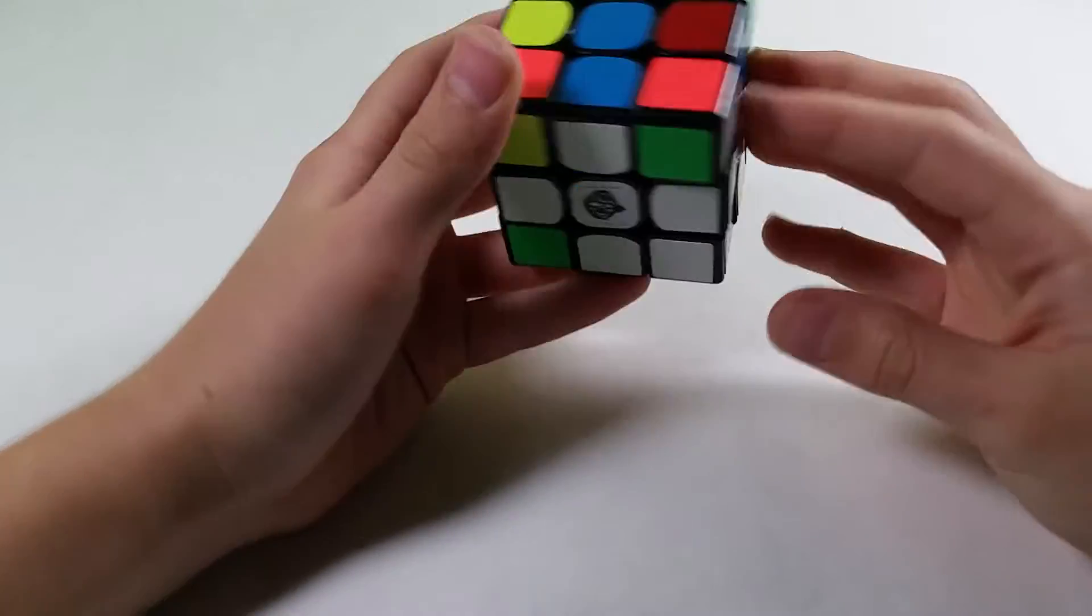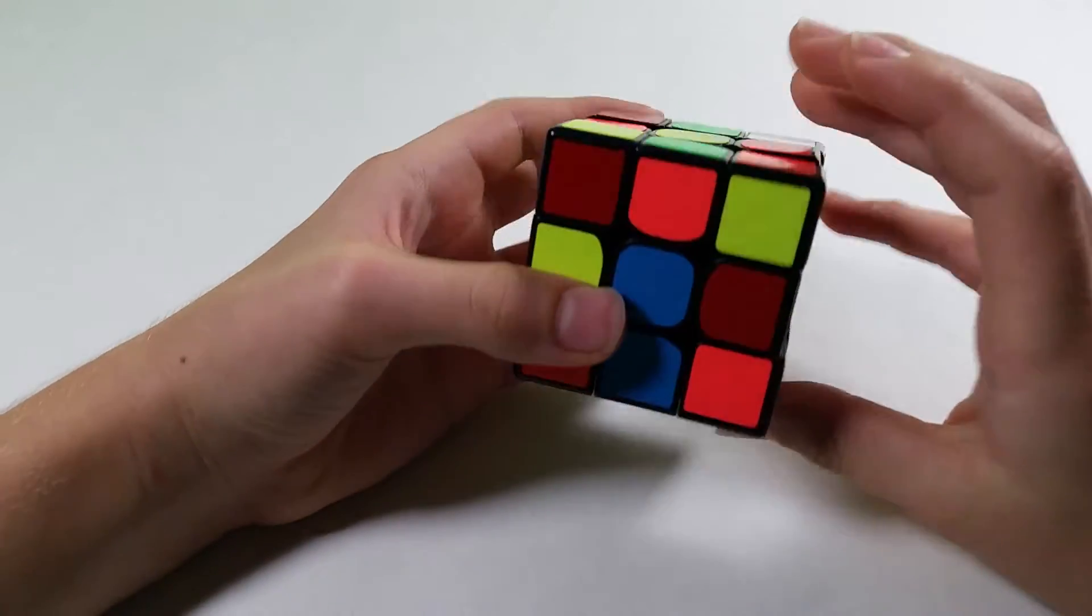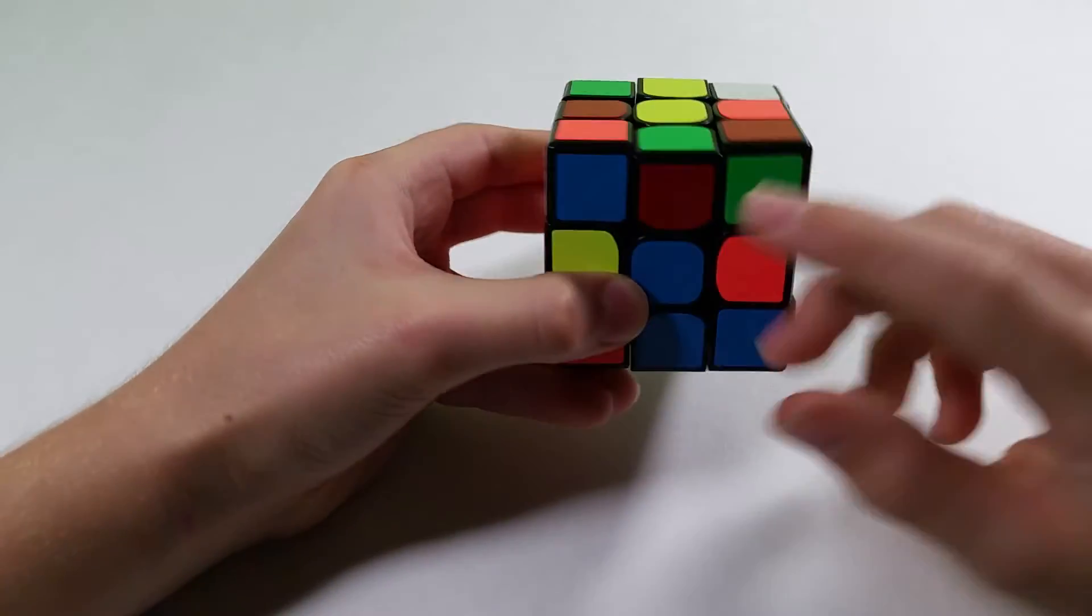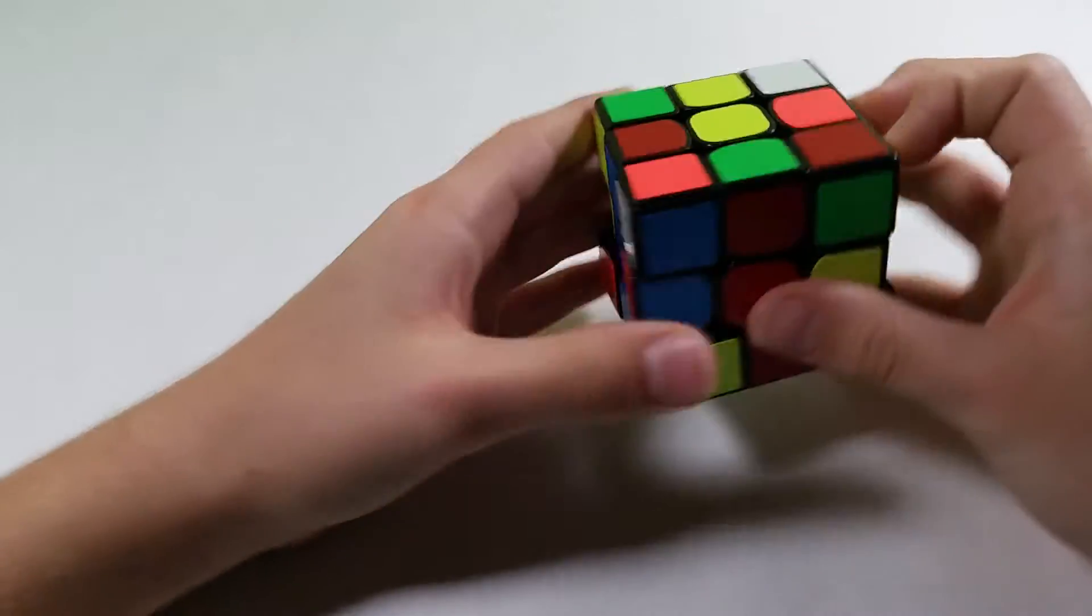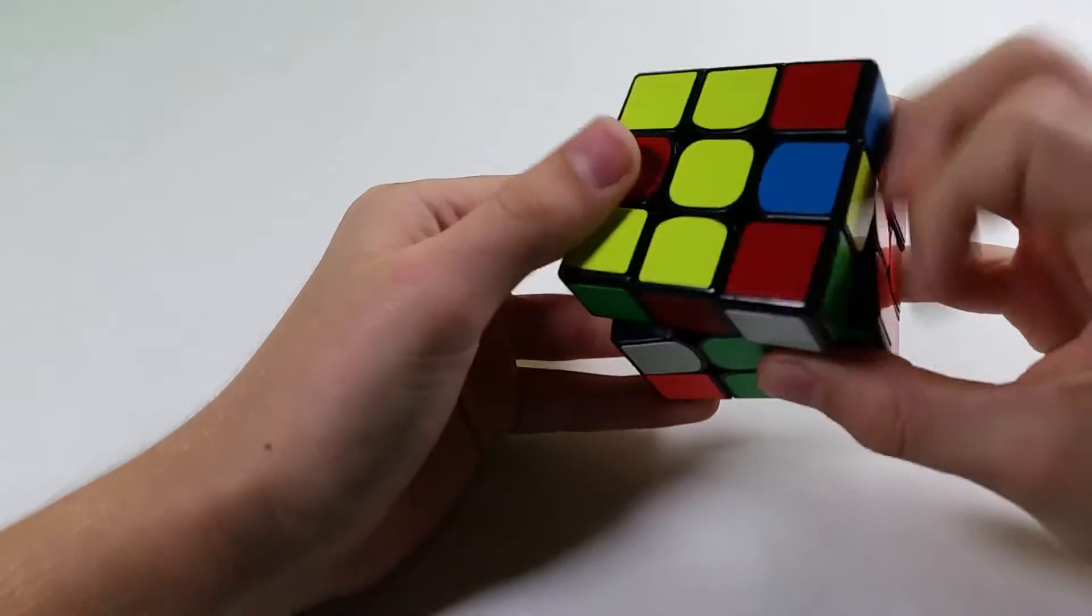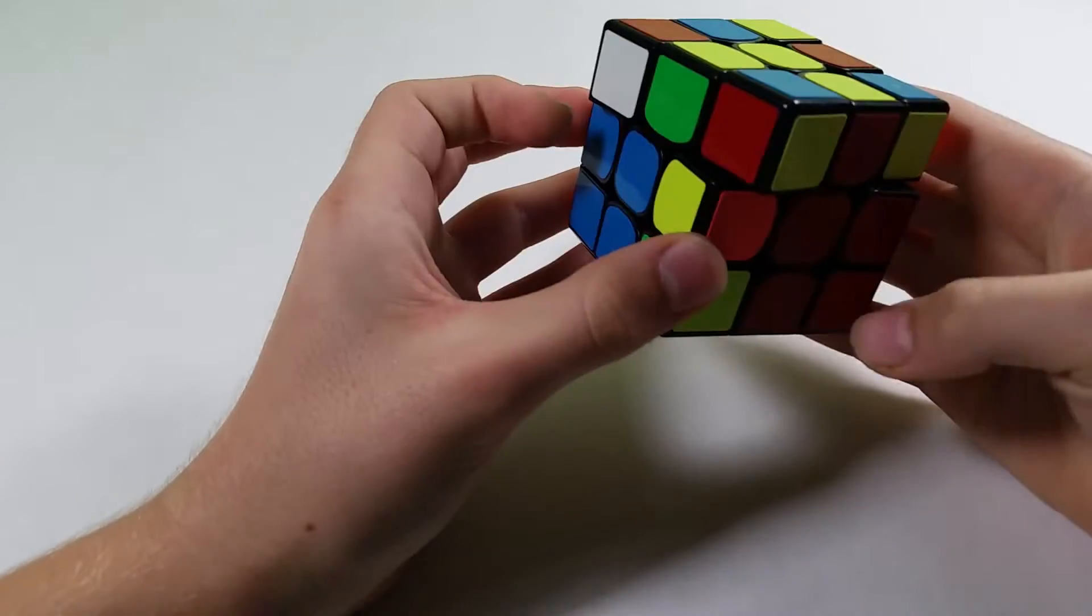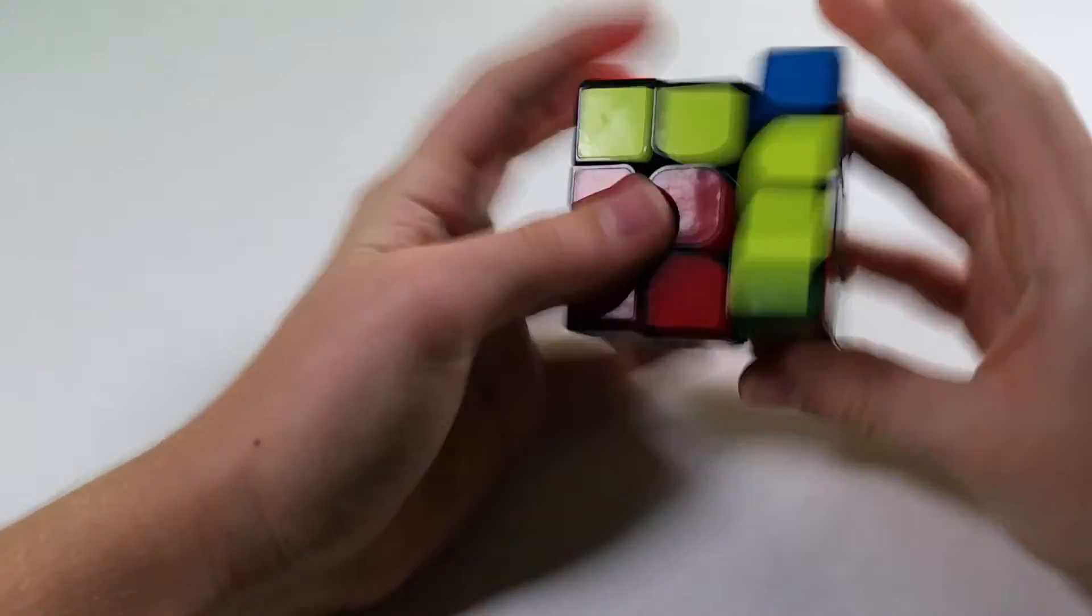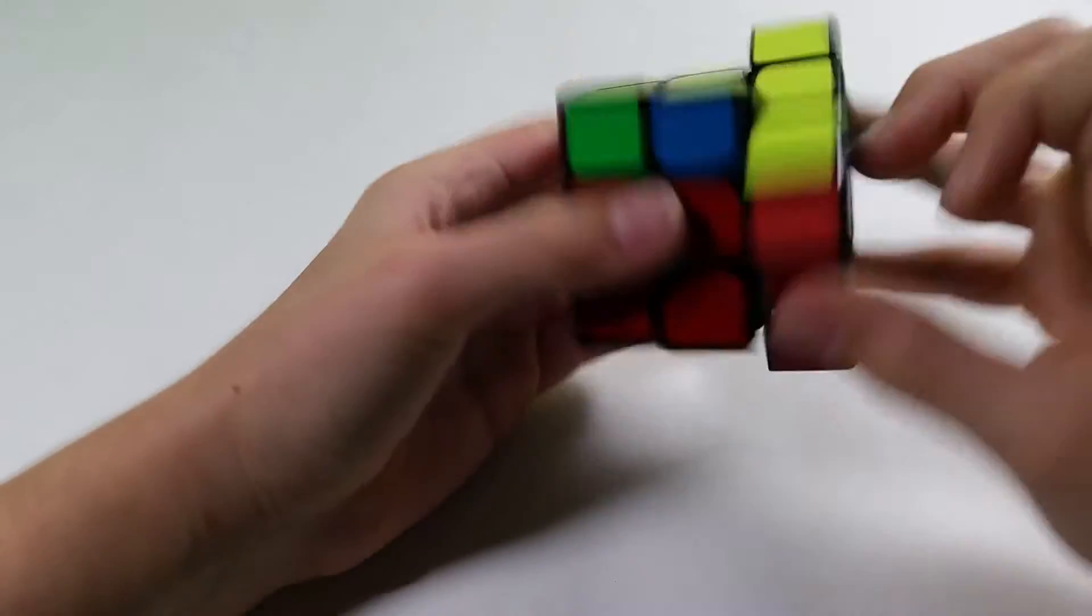While I was doing that, I saw these two right here, so I would solve them like that. Next, we have these two here, which I solve like that, these two. And then over here, these two. OLL and then PLL.